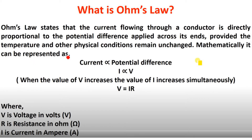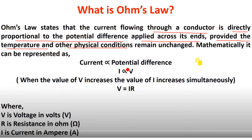So what is Ohm's law? Ohm's law states that the current flowing through a conductor is directly proportional to the potential difference applied across its ends, provided that temperature and other physical conditions — for example, the length, the area, material, temperature, pressure — remain unchanged. So if we apply a potential across the conductor, the current flowing in that conductor is directly proportional to the applied potential difference.